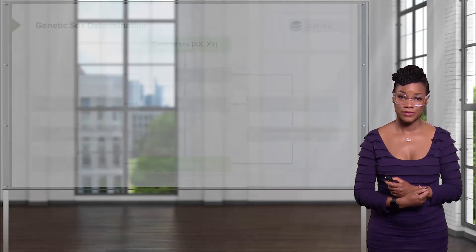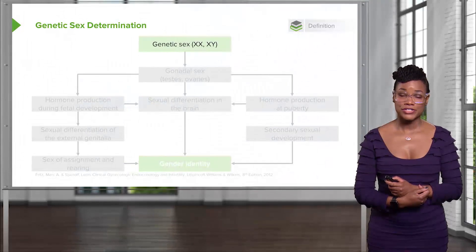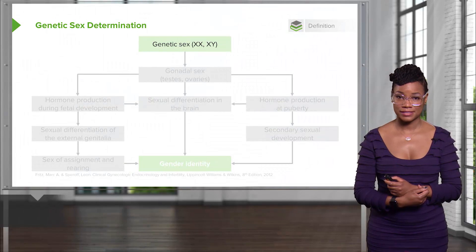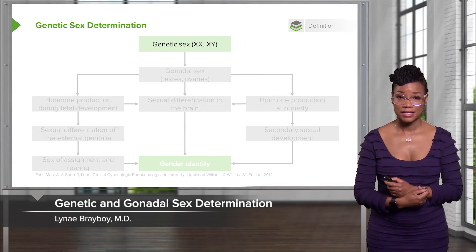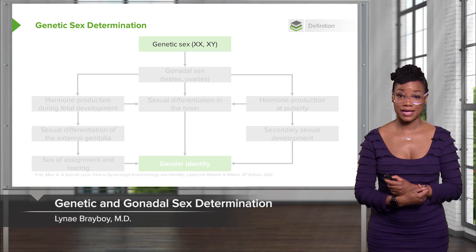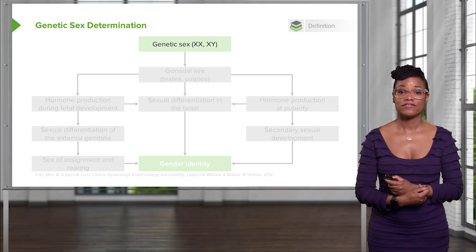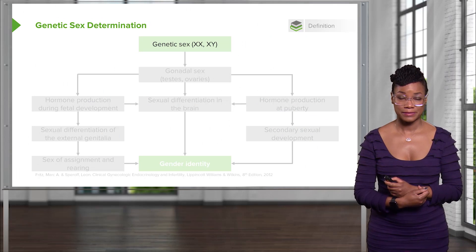Hi, today we're going to talk about Female Puberty Milestones. First, let's talk about the different types of sex. There are three types of sex: genetic sex, gonadal sex, and phenotypic sex.